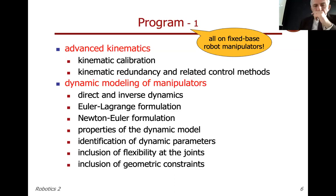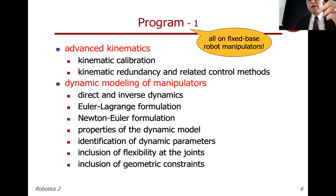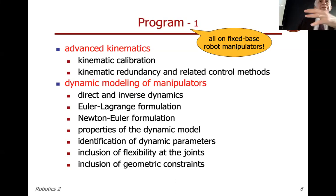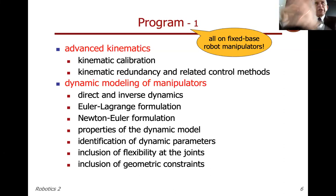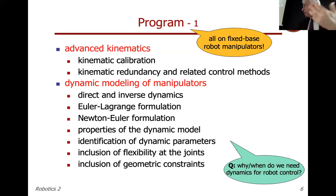Extra features include flexibility at the joint, very important nowadays as robots become lightweight and interact with humans — some form of compliance must be present and controlled. The most common approach is explicit compliance in the joints with lightweight but stiff links. Also covered is the case where the end-effector or part of the structure is geometrically constrained, and how dynamics changes when we constrain some degrees of freedom in an arbitrary way.